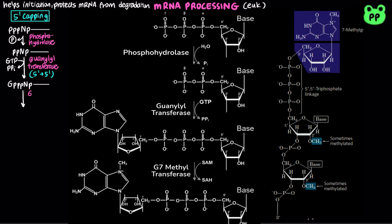Next, guanine-7-methyltransferase transfers a methyl group from S-adenosylmethionine, abbreviated as SAM, to nitrogen-7 of the terminal guanosine, producing the primary transcript with a 5' cap and S-adenosylhomocysteine, abbreviated as SAH. Occasionally, 2'-O-methyltransferase methylates the 2' hydroxyls of the first and second nucleotides adjacent to the cap. Methyl groups are also donated by SAM.